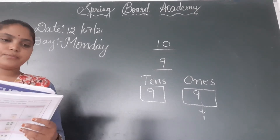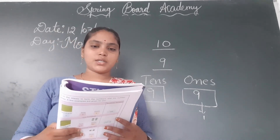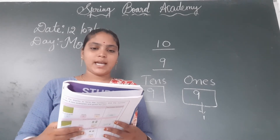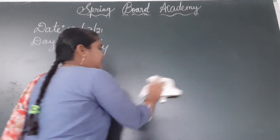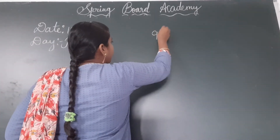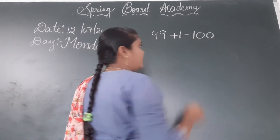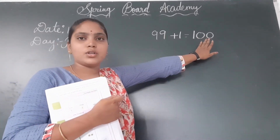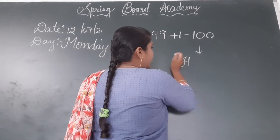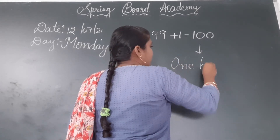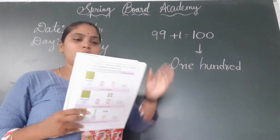By having 1 more ball, Raman can make another packet of 10 balls. So the number of balls in the shop will then become 1 more than 99. This number is 100. Totally 99 balls are there. Raman adds one more ball — the number is 100. Total balls become 100. How do we write this? Say the spelling of 100: O-N-E H-U-N-D-R-E-D. Total how many balls are there now? 100.